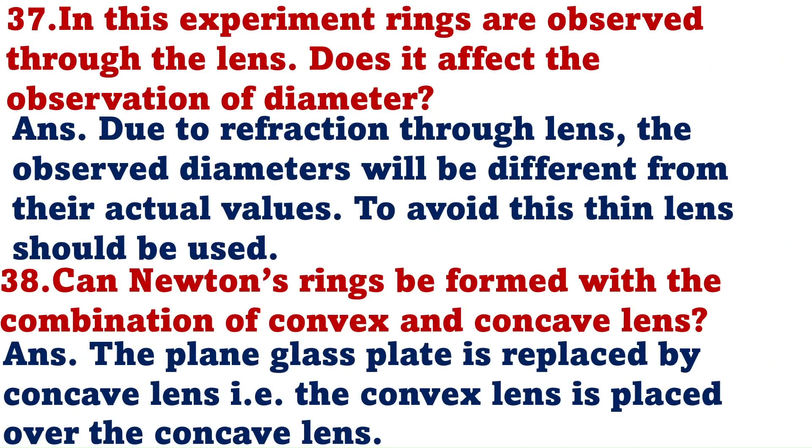In this experiment, rings are observed through the lens. Does it affect observation of diameter? Due to refraction through lens, the observed diameters will be different from their actual values. To avoid this, thin lens should be used.